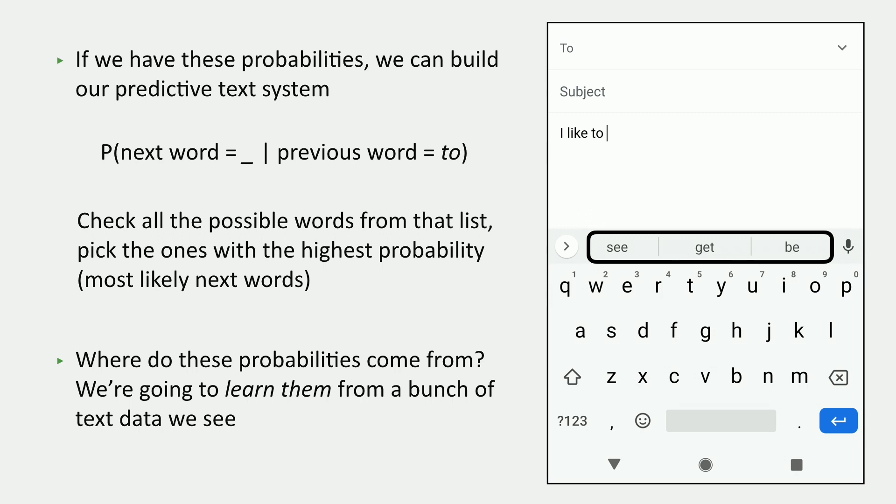All right. So the last piece that we're missing is where these probabilities actually come from. And here we're going to talk about how we learn them from text data.